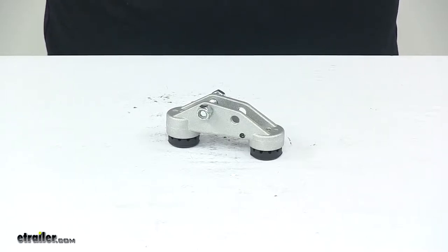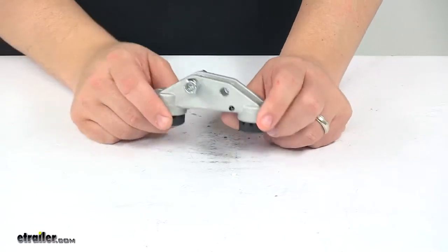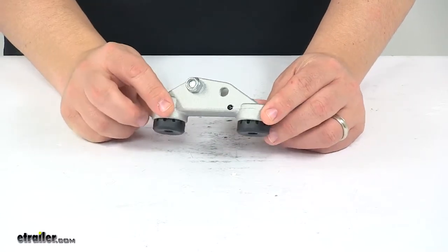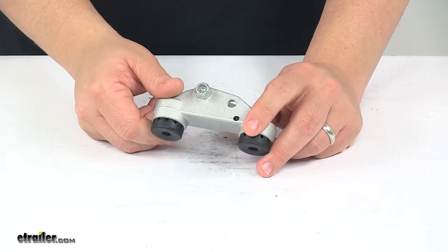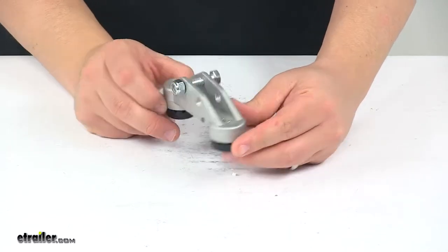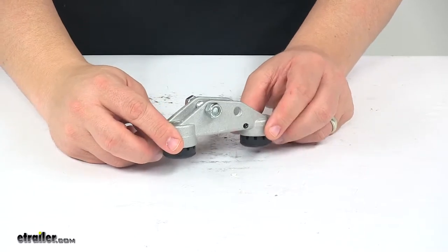Today we're taking a look at the replacement motor support toggle for a transom saver. This replacement motor support toggle replaces one of the toggles on your transom saver motor support head. It is specifically designed to fit JIF Marine transom savers.